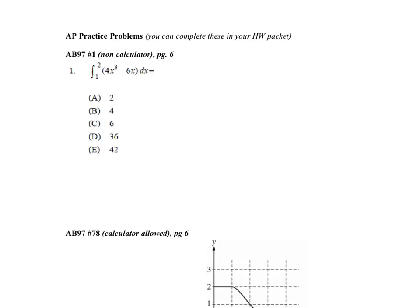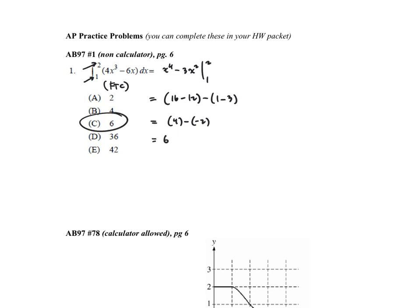Let's work some homework problems at a good pace. I see a definite integral, so I'll use the Fundamental Theorem. The antiderivative of X to the fourth minus 3X squared is X to the fourth over 4 minus 3X squared — wait, the antiderivative of X cubed is X to the fourth over 4, and the antiderivative of negative 3X squared is negative X cubed. Evaluating from 1 to 2: big F at 2 is 16 minus 12; big F at 1 is 1 minus 3; so this equals 4 minus negative 2, which is 6.